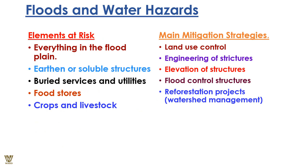Elements at risk in a floodplain include earthen or soluble structures, buried services, food stores, crops, and livestock. Main mitigation strategies are: land use control, engineering of structures, elevation of structures, flood control structures, reforestation projects, and watershed management. Proper use of floodplains, engineering more resilient buildings, appropriate elevation so floodwaters don't cause damage, and reforestation to counter deforestation are all key approaches.